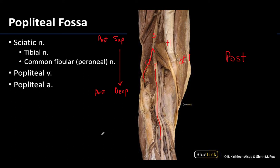Intermediate in depth — but on the deeper side of intermediate — is the popliteal vein, and deepest of all will be the popliteal artery, which is literally sitting on the surface of the posterior femur. Recall that deep veins typically travel in pairs near the artery, and sometimes you see them wrapping around the artery, as you can see happening right here. Oftentimes the popliteal vein and artery are wrapped together tightly in fascia, but with removal of that fascia you can see the separate structures, as has been done in this dissection.